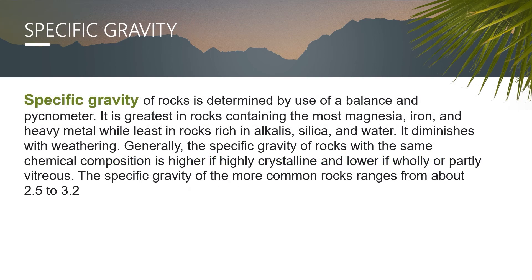The last method is specific gravity. Specific gravity of rocks is determined by use of a balance and pyknometer. It is greatest in rocks containing the most magnesia, iron, and heavy metals, while least in rocks rich in alkalis, silica, and water. It diminishes with weathering. Generally, the specific gravity of rocks with the same chemical composition is higher if highly crystalline, and lower if wholly or partly amorphous. The specific gravity of most common rocks ranges from about 2.5 to 3.5.